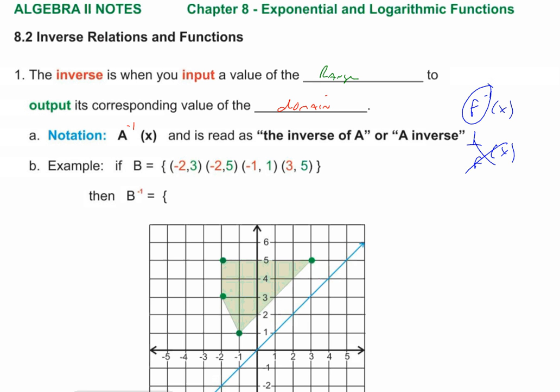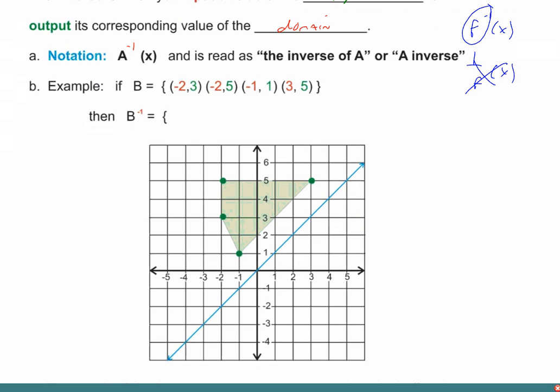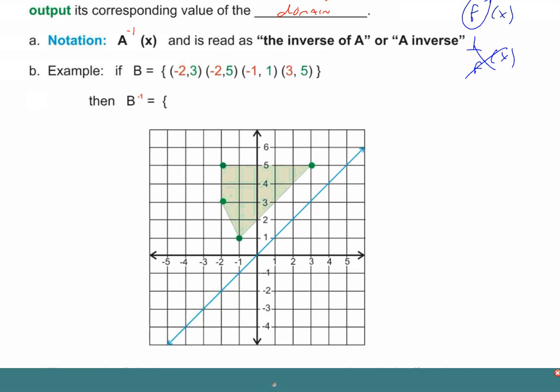Here's an example. We've got a relation, the B relation: negative 2, 3, and you can see that point is right there. You've got the point negative 2, 5, that's right there. You've got negative 1, 1, right there, and 3, 5, right there.